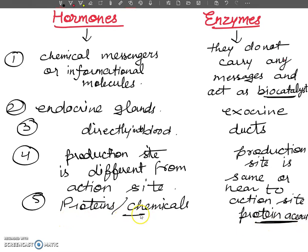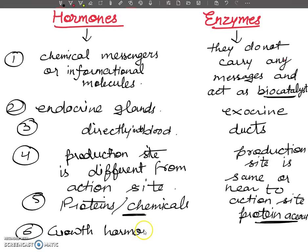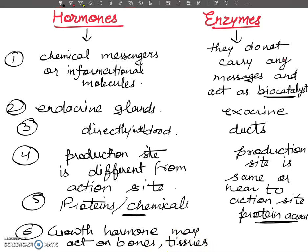The last point: the response of hormones is quite widespread. For example, the growth hormone may act on the bones, tissues, and various other parts of the body for overall growth. Enzymes, on the other hand, are generally specific. For example, the enzyme maltase acts only on the substrate maltose — this is specificity.